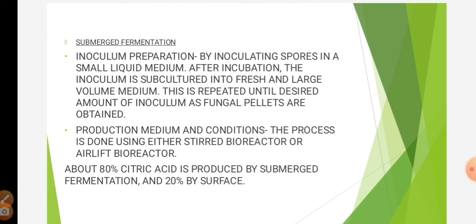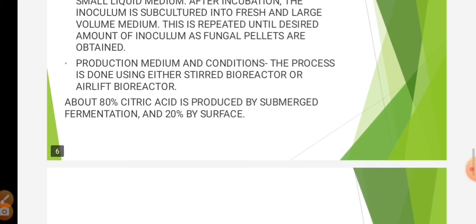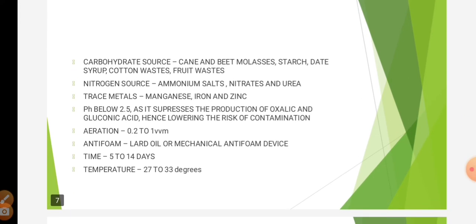The carbohydrate sources used for production of citric acid include cane and beet molasses, starch, date syrup, cotton wastes, fruit wastes which include peels of banana, pineapple, oranges, or any fruits, blueberry wastes, etc. A high sugar-containing medium is preferable — that is, the medium should contain about 14 to 20% glucose or sucrose so that the inoculum can use a greater amount of sugar for processing.